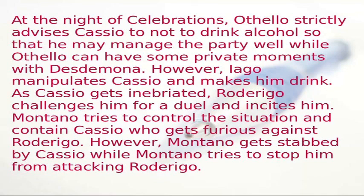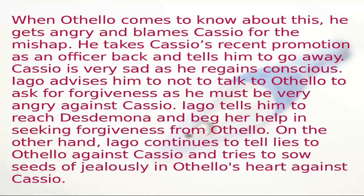As Casio gets inebriated, Rodrigo challenges him to a duel and incites him. Montano tries to control the situation but gets stabbed by Casio while attempting to stop him from attacking Rodrigo. When Othello learns of this, he angrily strips Casio of his recent promotion and sends him away. As Casio regains conscience and feels very sad, Iago advises him not to approach Othello directly but instead to reach Desdemona and beg her help in seeking forgiveness. On the other hand, Iago continues telling lies to Othello against Casio, sowing seeds of jealousy.